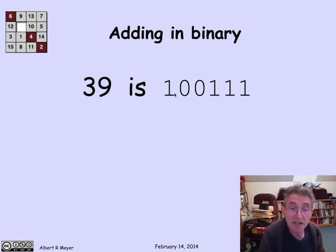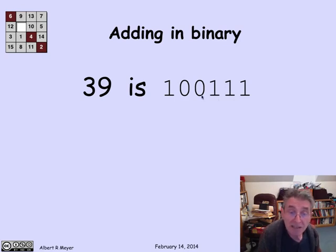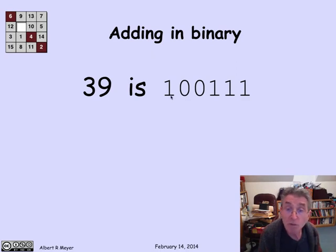Here is the binary representation of the number 39. This is the ones place, that's the twos place, that's the fours place. So 1 plus 2 plus 4 is 7. Then this is the eighth place with nothing, this is the sixteenth place with something, and this is the 32 place with 1. So we add 32 to 7 and get 39.